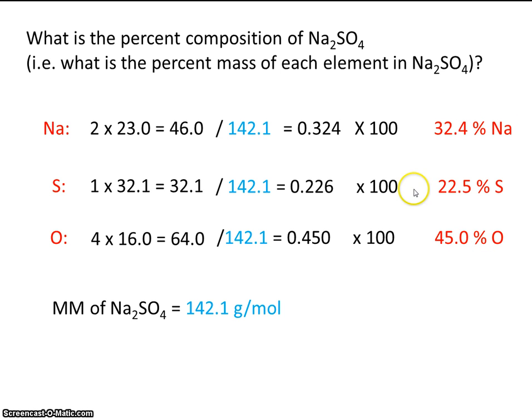Notice that this should always add up to 100%. It might not be exactly 100% with sig figs and rounding, but in general, it should sum up to 100%.